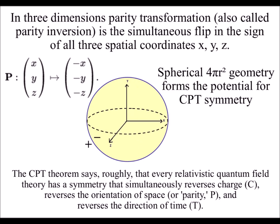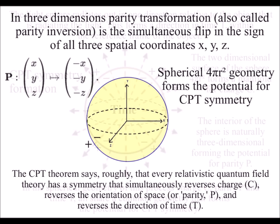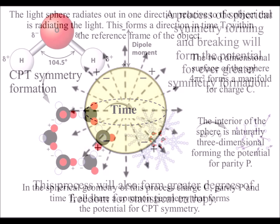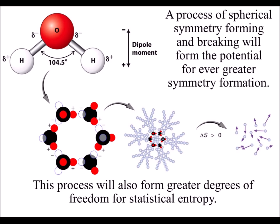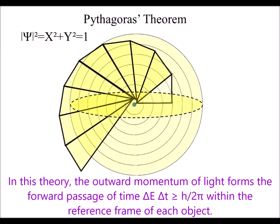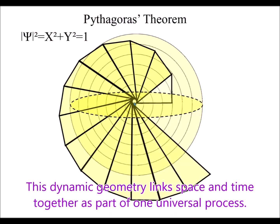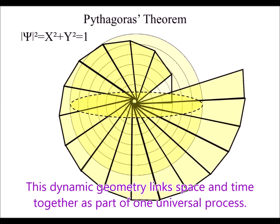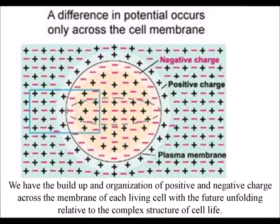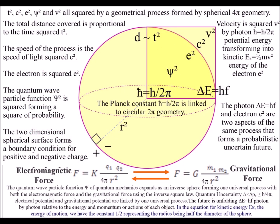In this theory, each line symmetry represents a potential timeline for future possibilities and probabilities. The greatest probability is that this process of circle symmetry forming and breaking will form entropy or disorganization. But because the geometry forms infinite timelines, there will always be a small chance that the symmetry will form the emergence of greater complexity — seen in the beauty of the Fibonacci spiral, the diversity of cell life, and in the potential for ever more abstract mathematics.